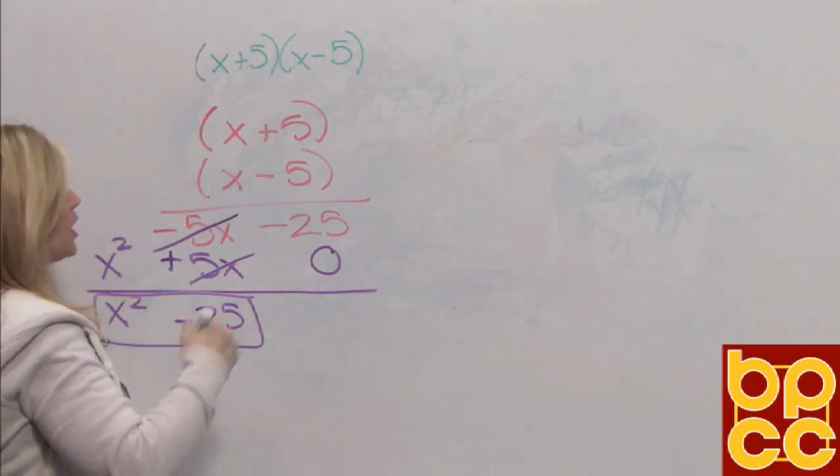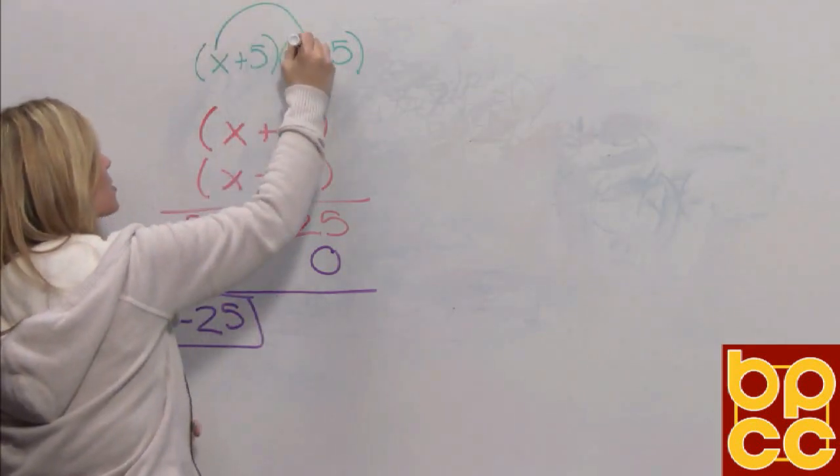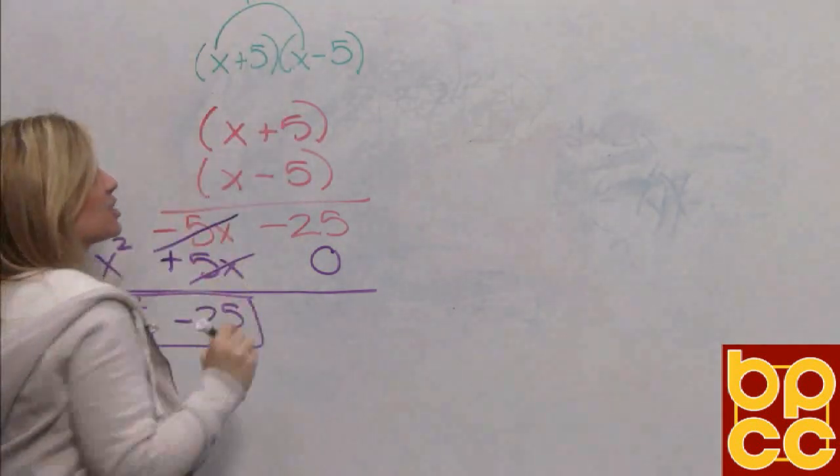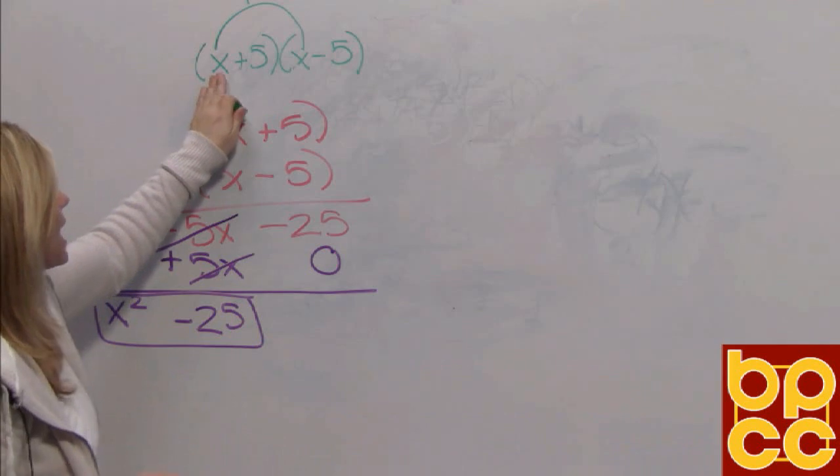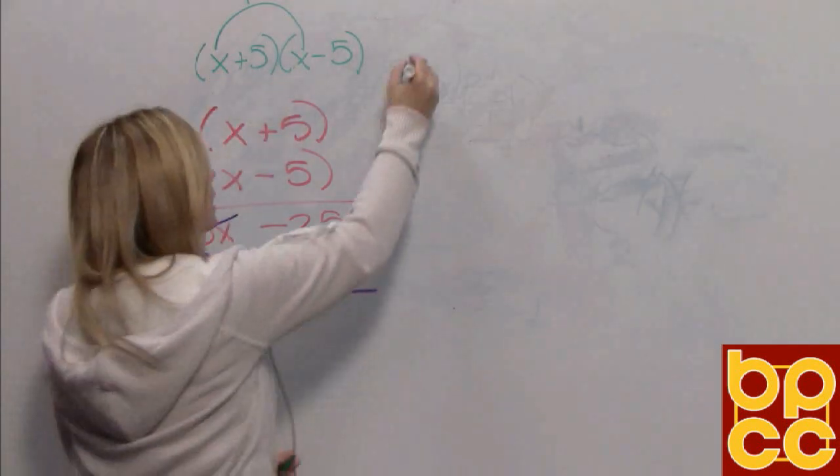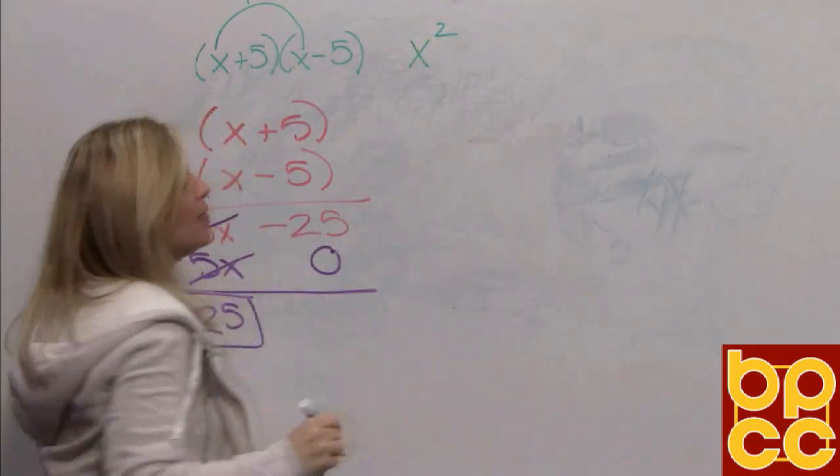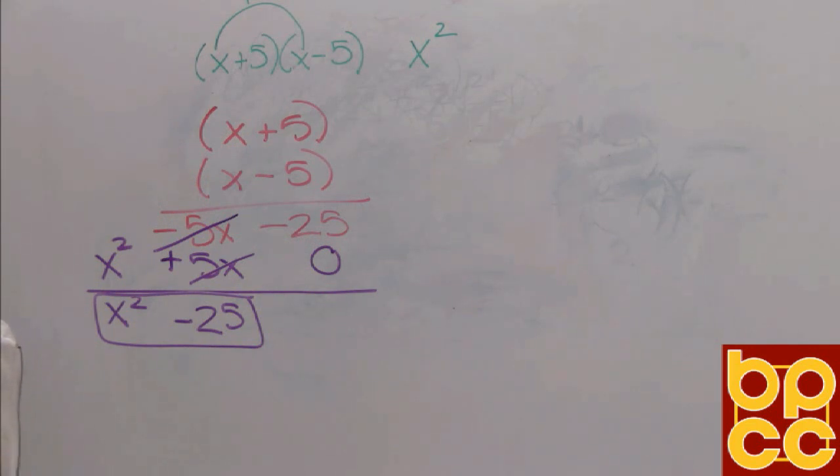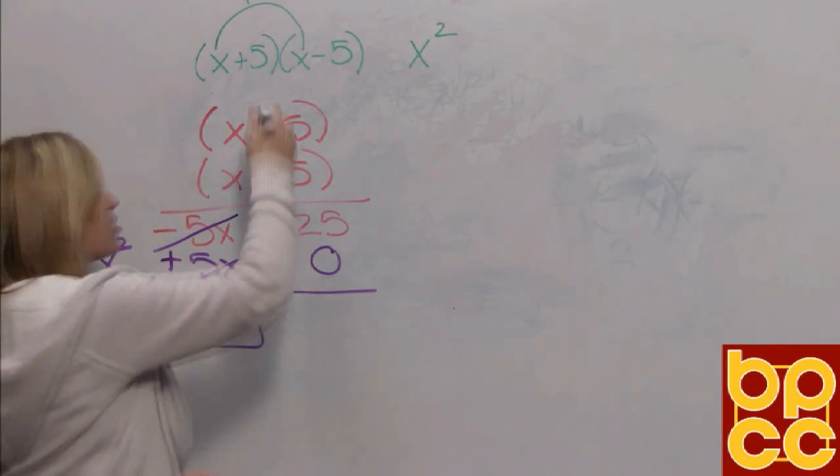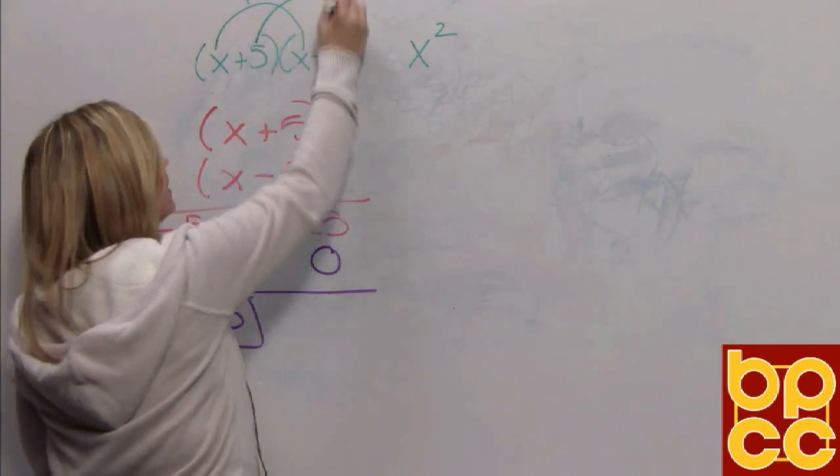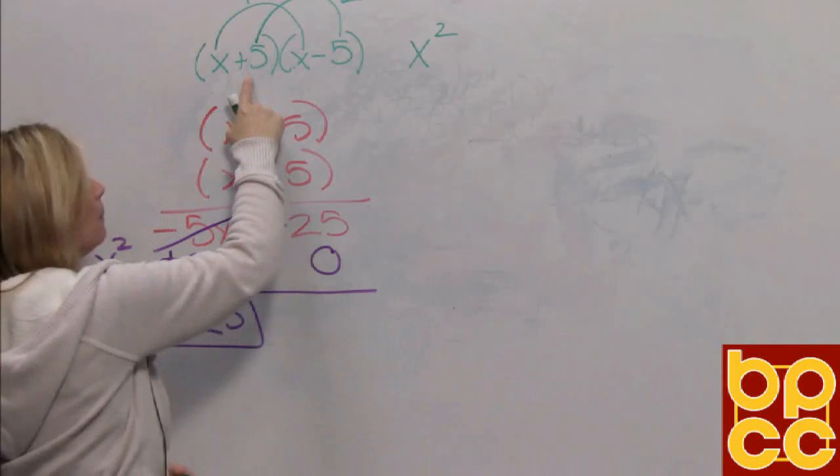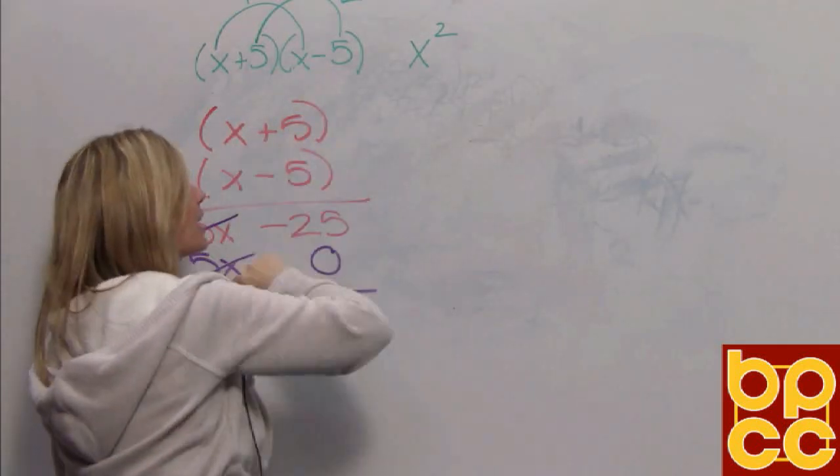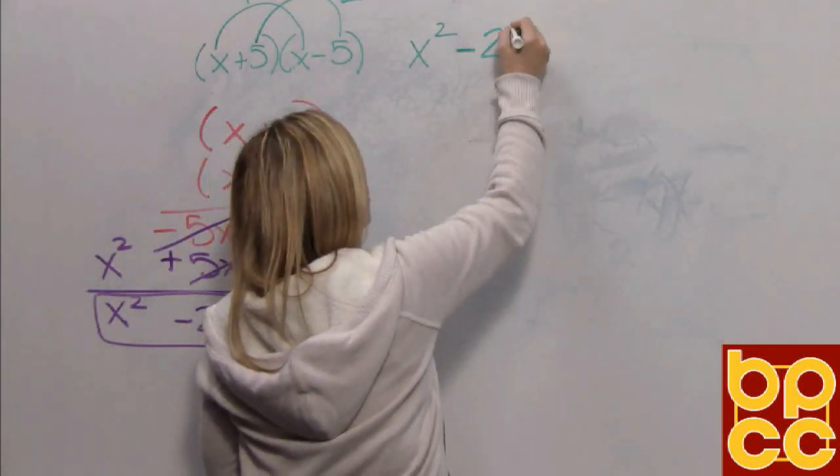Well, look who's first in the parentheses. x times x. That is the first term. So what is x times x? It's x squared. Then to multiply conjugates by the shortcut, the trick, you multiply the last. Who is last? It's what's last in the parentheses. This positive 5 and this negative 5. Positive 5 times negative 5 is negative 25.